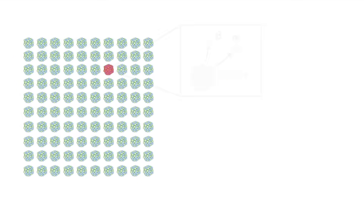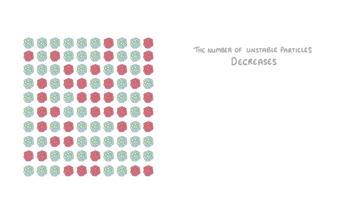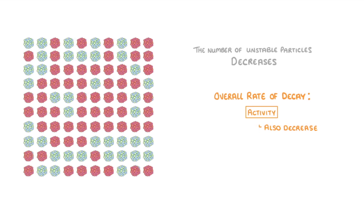To properly understand these concepts, let's imagine our radioactive sample as 100 unstable isotopes, each of which can decay by emitting radiation in order to become stable. If we watch this sample decay, the first thing we notice is that the decay process is completely random, so we have no way of knowing when any particular particle will decay. As time goes on and more and more of them decay, the number of unstable particles remaining decreases. Because there are fewer particles left to decay, the overall rate of decay — the activity — will also decrease, which is why it looks like the sample is decaying more slowly than it was at the start.